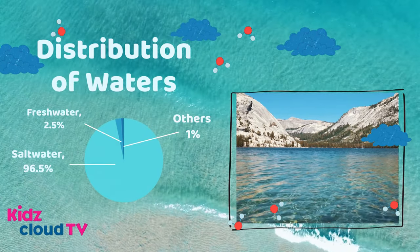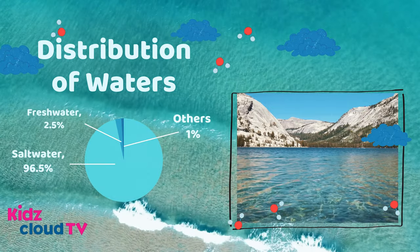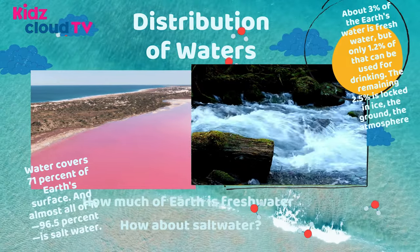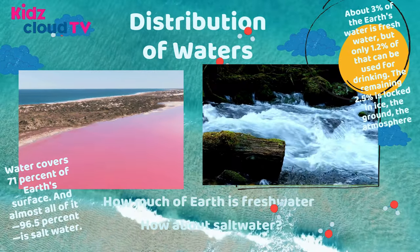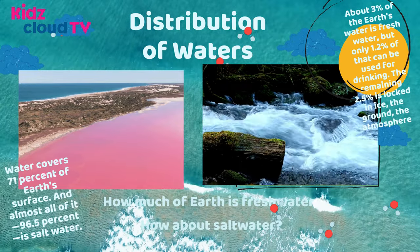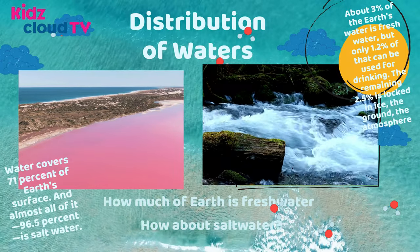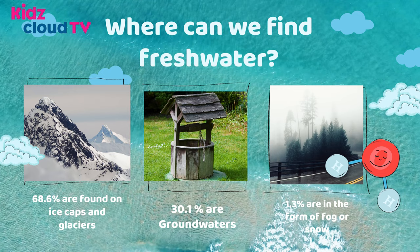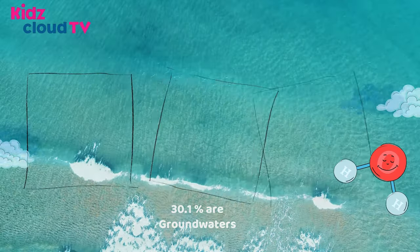Distribution of waters: around 95.5% is salt water, and about 2.5% is fresh water. Others are just 1%. Water covers 71% of Earth's surface, and almost 96.5% of that is just salt water. About 3% of the Earth's water is fresh water, but only 1.2% of that can be used for drinking. The remaining 2.5% is locked in ice, the ground, and the atmosphere. Of fresh water, 68.6% is found in ice caps and glaciers, 30.1% is groundwater, and 1.3% is in the form of fog or snow.